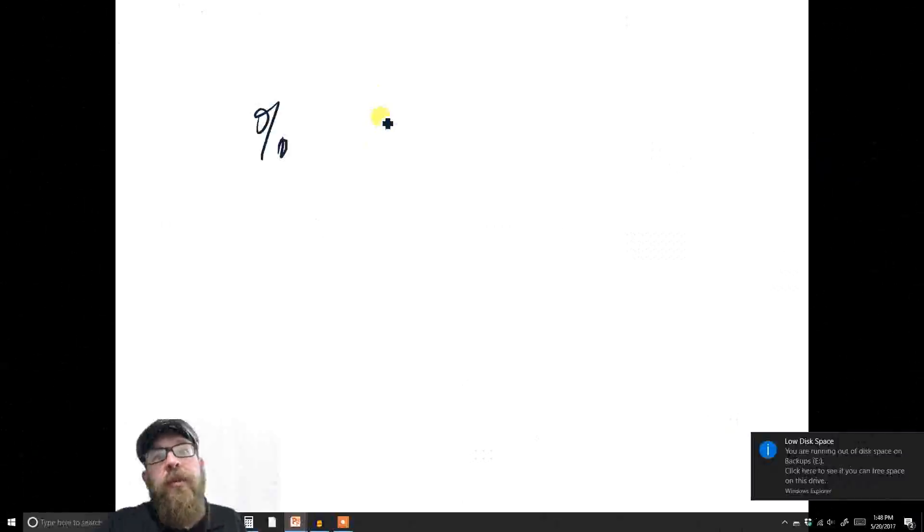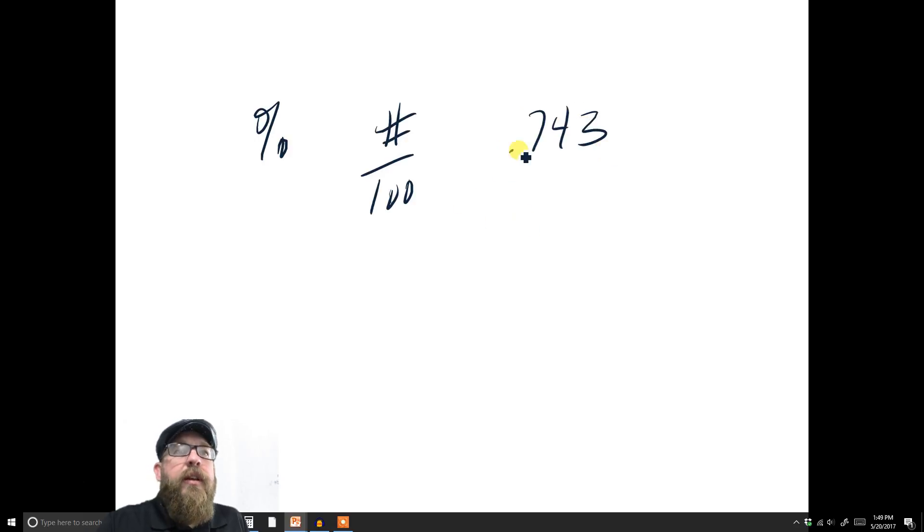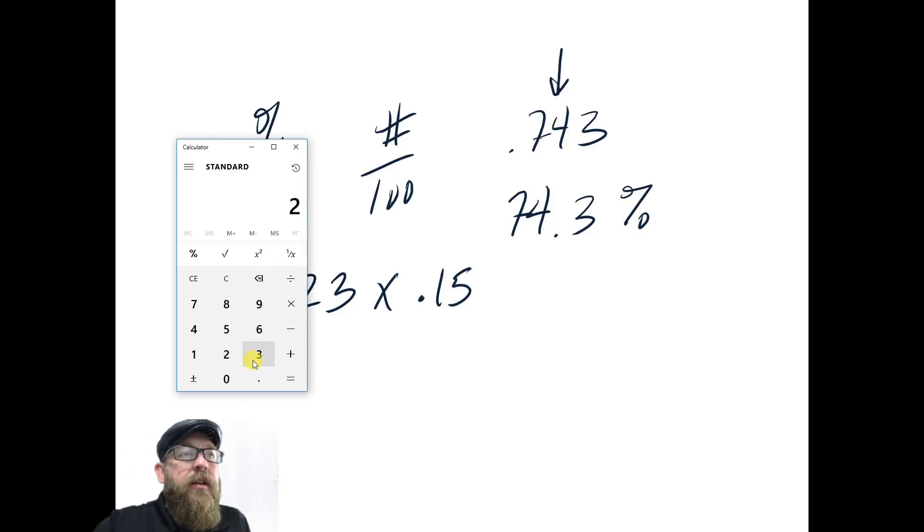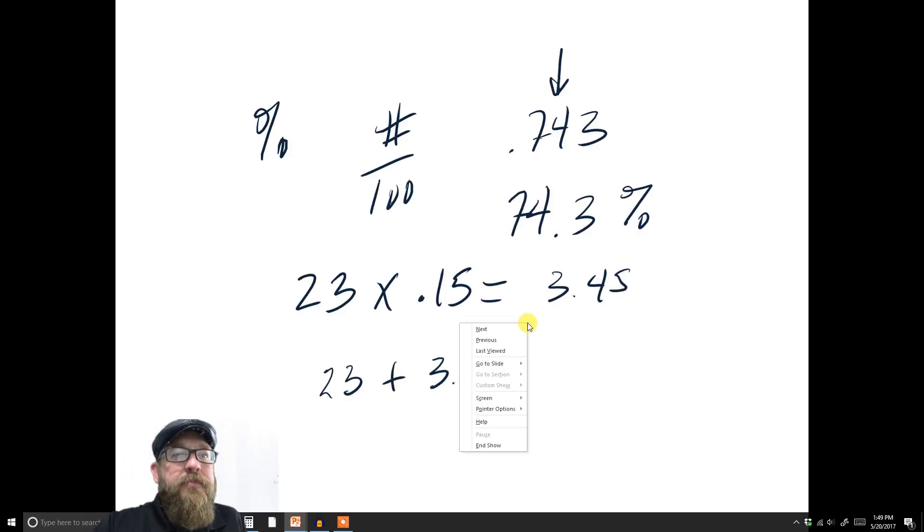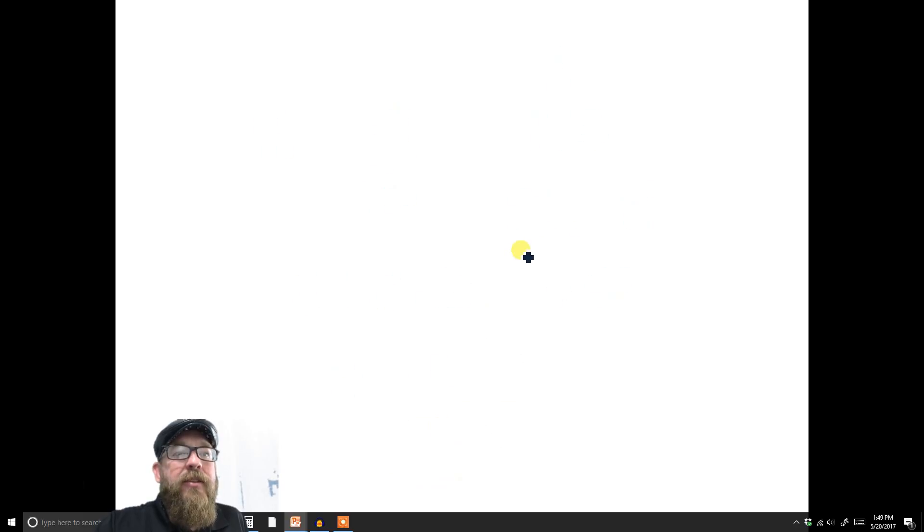Percentages are, of course, comparing a number to 100, and they lend themselves nicely to decimals. Because if you had a decimal 0.743 as a percentage, that would be 74.3%. A basic calculation: if you wanted to take 15% of 23, all you got to do is 23 times 0.15, and you get 3.45. So if you wanted to do a 15% increase of 23, that would be 23 plus 3.45.